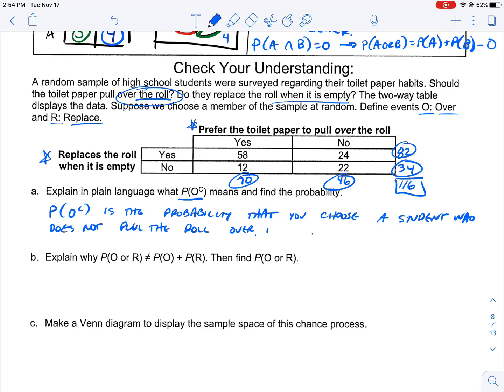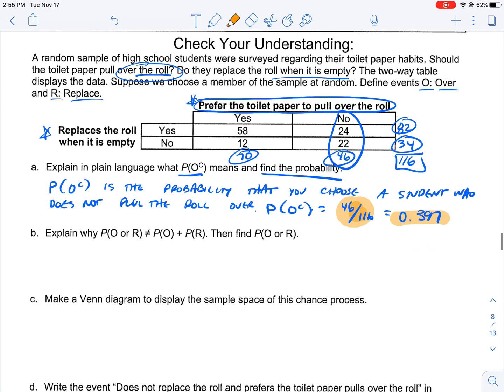P O superscript C is the probability that you choose a student who does not pull the roll over the top, they don't pull the toilet paper over the roll. We want to find that probability. P of O superscript C is the people who don't pull the toilet paper over the roll. Do you pull it over the roll? No. 46 out of 116 people, which is equal to 0.397.